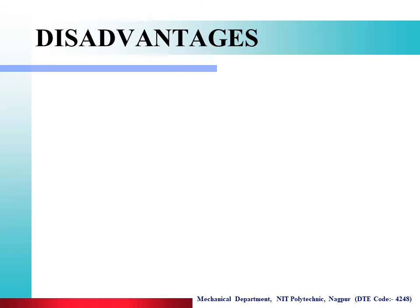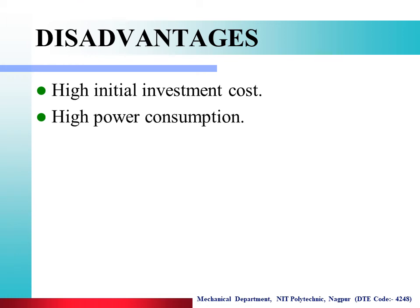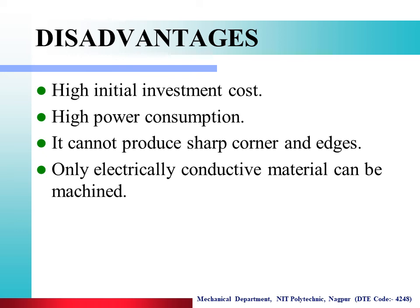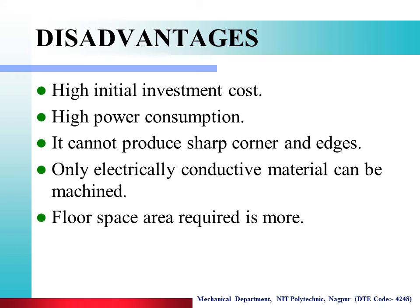Disadvantages of Electrochemical Machining: First, high initial investment cost. Second, high power consumption. Third, it cannot produce sharp corners and edges on the workpiece surface. Fourth, only electrically conductive materials such as stainless steel, copper, brass, and aluminum can be machined by ECM. Fifth, the floor space area required is more — machine installation occupies a large floor area.